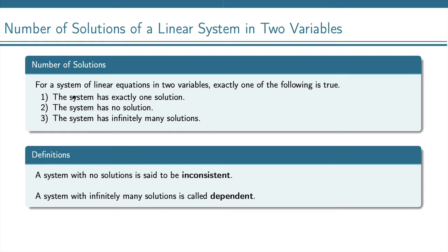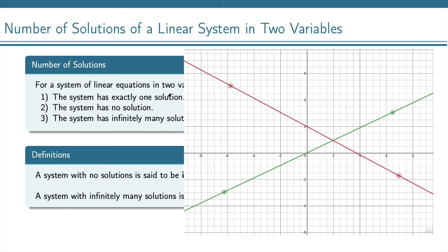First is the system can have exactly one solution. That is in this case where you have these two lines that are crossing in just one point. You can see that in a lot of different ways, if we just move these lines around, they cross in just one point.